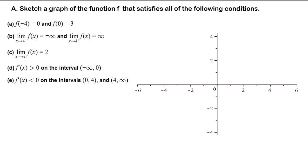In this question we need to sketch a graph of the function that satisfies all of the following conditions. In part a, f(-4) = 0, meaning the graph passes through the point (-4, 0). Similarly, f(0) = 3, so the graph also passes through (0, 3).